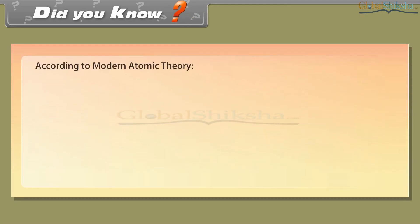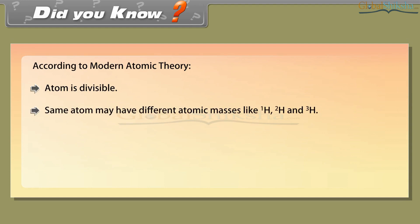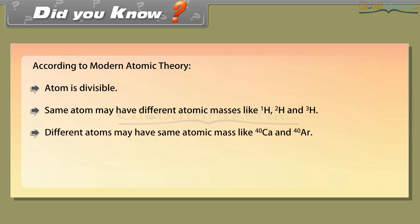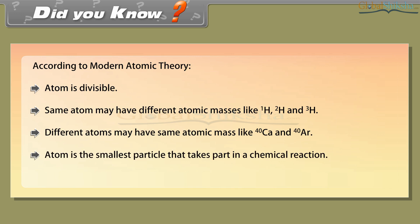Did you know: according to modern atomic theory, the atom is divisible. The same element may have different atomic masses, like ¹H, ²H, and ³H. Different atoms may have the same atomic mass, like ⁴⁰Ca and ⁴⁰Ar. The atom is the smallest particle that takes part in a chemical reaction, and the mass of an atom can be converted into energy.